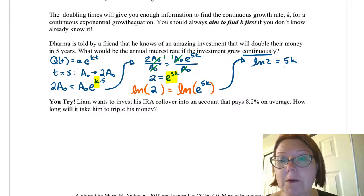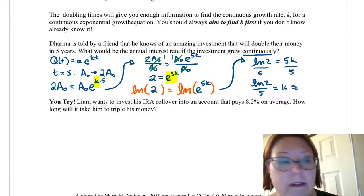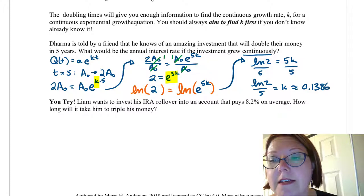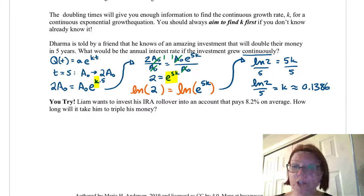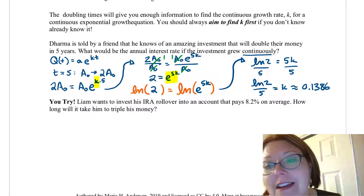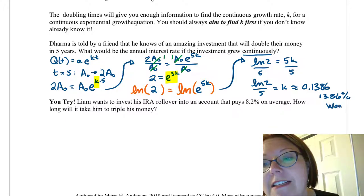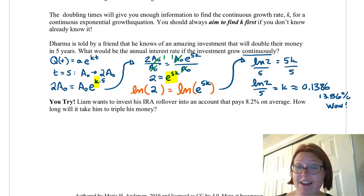We can then divide both sides by five giving us ln two over five equals k. Evaluating this gives 0.1386 for a k value, which means that the interest rate on this amazing investment is 13.86%. Wow, that is a really high investment rate.